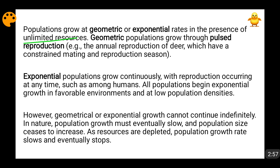Geometric population growth occurs through pulsed reproduction, and exponential population growth occurs continuously. The exponential rate of population growth is much higher than the geometric rate. Geometric growth happens through pulsed reproduction — that is, reproduction in specific pulses — while exponential growth happens through continuous reproduction. You need to understand this difference clearly.